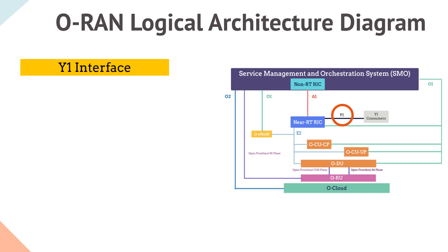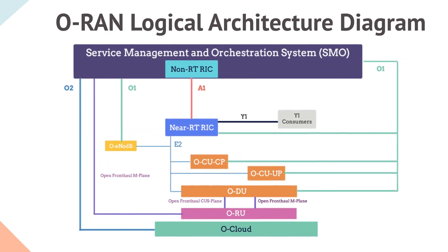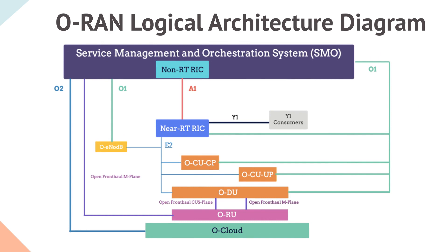What type of RAN analytics information is exposed by the Y1 interface? A few examples are quality of experience information, UE location information and more such RAN capabilities. This information can be used for a variety of purposes by its consumers. So we have majorly covered all the interfaces as part of the ORAN logical architecture diagram, and to summarize, we covered